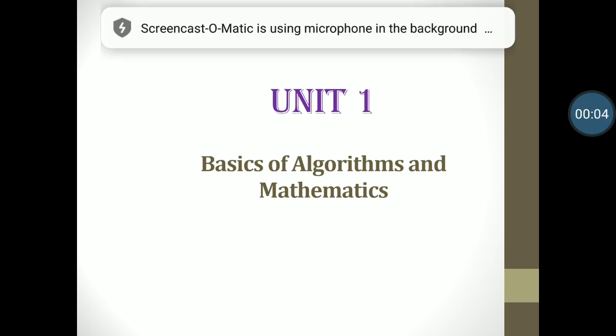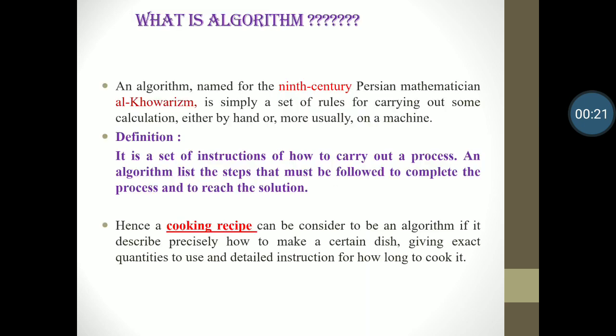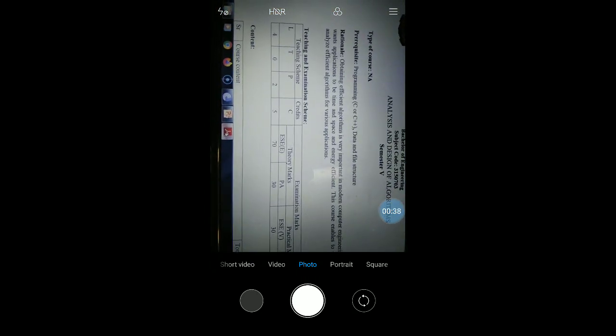Hello students, welcome to the first video lecture of ADA subject, which is Analysis and Design of Algorithms, basically in fifth semester. Your ADA subject is of five credits. You can see the credit calculation of your subject on the screen. By GTU, four hours of lectures and two hours of practical — total five credits of ADA subject is allocated in your fifth semester.